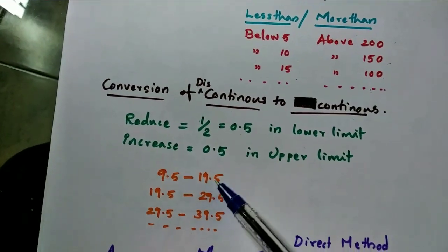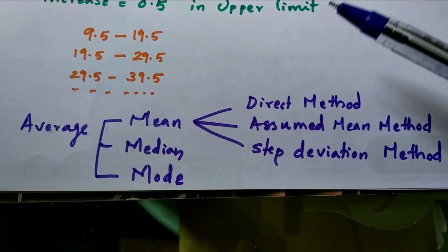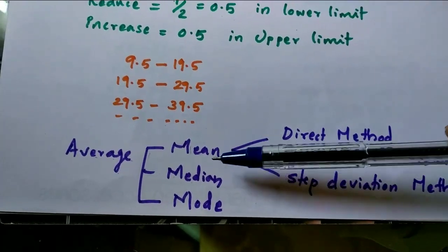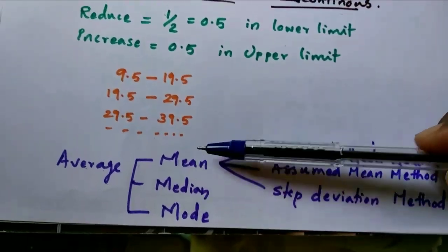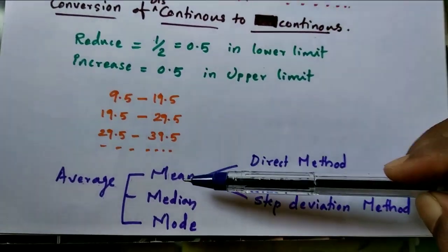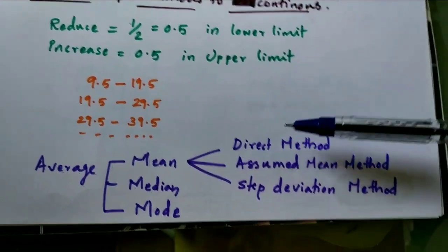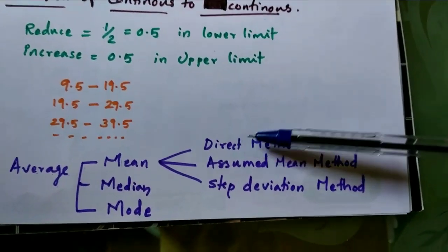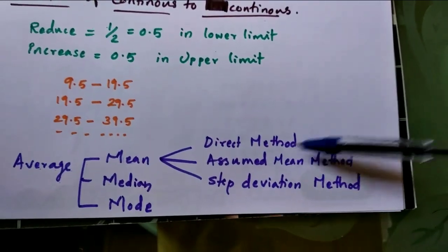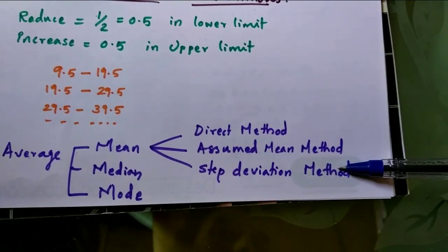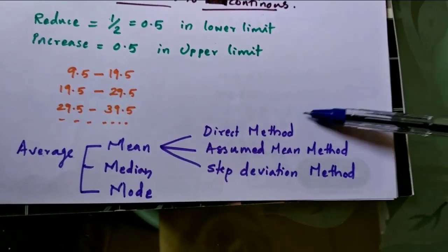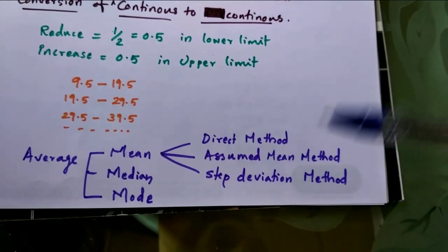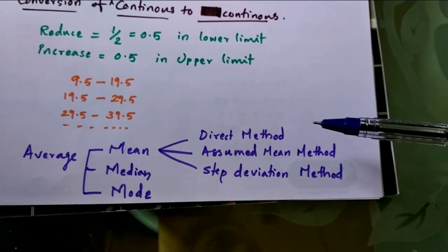In this chapter, we'll discuss averages. The averages are mean, median, and mode. First, we'll learn mean. We have three different methods to find the mean: the direct method, assumed mean method, and step deviation method. We have formulas for these three methods, and we'll solve problems in the next video. Thank you.